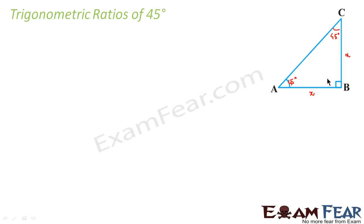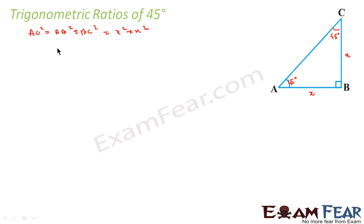We have seen that to find trigonometric ratios, the first thing we have to do is find the sides of the triangle. So if we can find the sides of this triangle, we can find the trigonometric ratio. This is a right triangle, so we can say AC² = AB² + BC², which is nothing but x² + x², so AC = √(2x²), that is √2·x. So AC is nothing but √2·x.